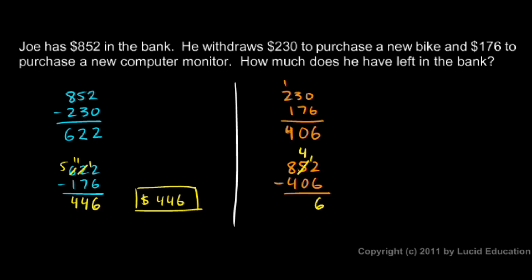It gives me a $6 right there. And then in the next column I have $4 minus $0 which is $4. And then $8 minus $4 which is $4. So once again I get $446.